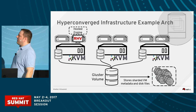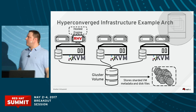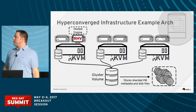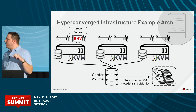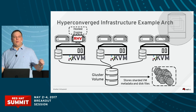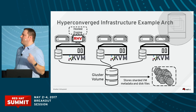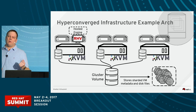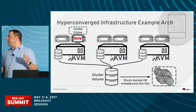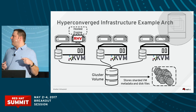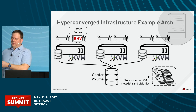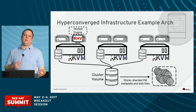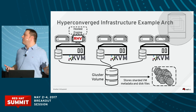The next thing I want to talk about as far as use cases go is hyperconverged Gluster and oVirt, or just virtualization. This is wildly different than any of the use cases we've talked about. Virtual machines tend to be more random workload than the sequential workloads we talked about with large file, and they don't have the metadata overhead that you see with small files.